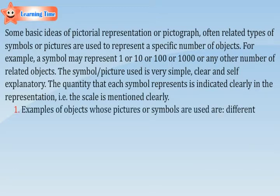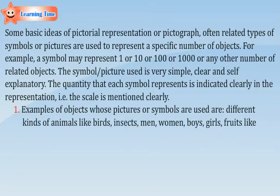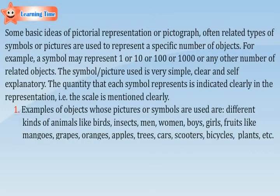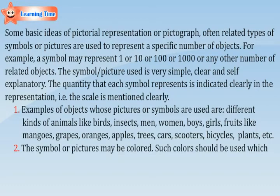Examples of objects whose pictures or symbols are used include different kinds of animals like birds, insects, men, women, boys, girls; fruits like mangoes, grapes, oranges, apples; trees, cars, scooters, bicycles, plants, etc. The symbol or pictures may be colored.